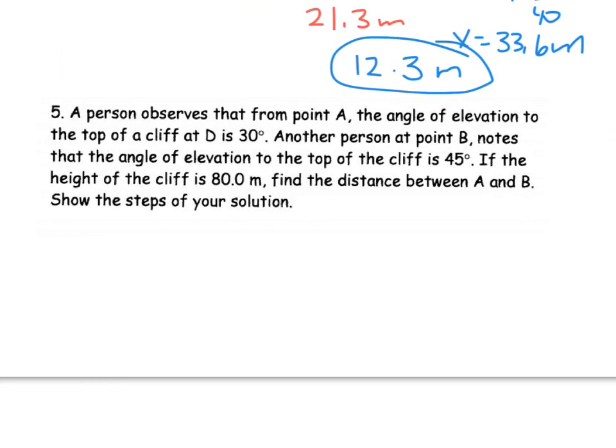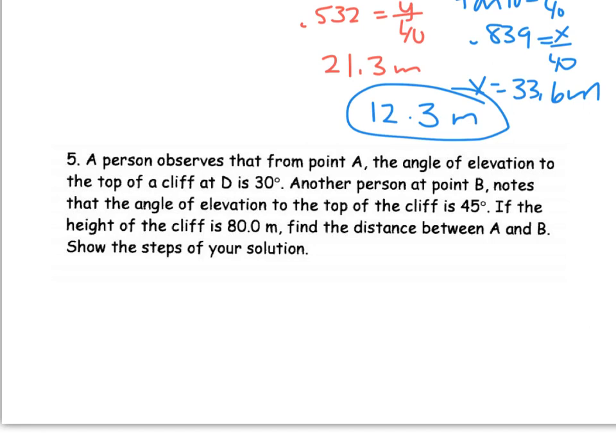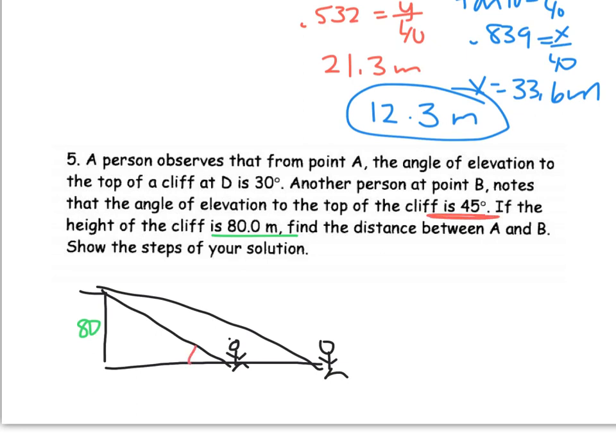Last one is when you have two observers looking at the same object. So this one, you have a cliff and you have a person who's observing it at point A. So you have one person and a second person. It tells me the height of the cliff is 80. And then basically I'm going to have these two angles of elevation going up. So the trouble is figuring out which is which. So the closer you get to the cliff, the higher your angle is. So this one with an angle of 45 is going to be closer than the one at 30.